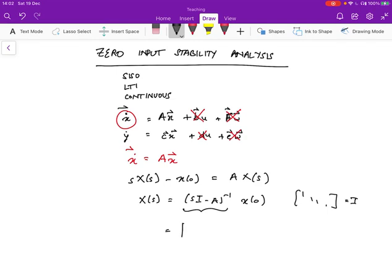And we can rewrite this over here, the inverse in terms of the cofactors. If you're familiar with the algebra, this can be written as the transpose of the cofactors of S I minus A over the determinant of S I minus A, where this vertical line denotes the determinant.